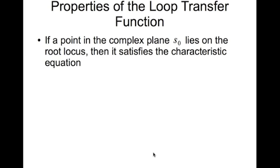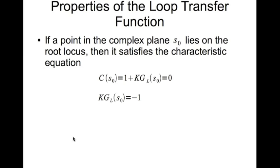Properties of the loop transfer function: if a point s-naught in the complex plane lies on the root locus, then it satisfies the characteristic equation. So the characteristic equation evaluated at s-naught gives 1 plus k times g_L evaluated at s-naught equal to 0, which means k times g_L evaluated at s-naught equals minus 1. Notice that s-naught is a complex number, so this whole thing is a complex number.